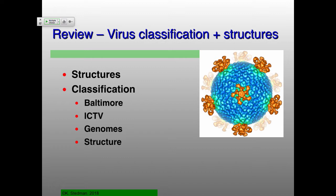Classification-wise, we talked about the Baltimore classification, which is based on — anyone? Is it based on the messenger RNA? It's based on the messenger RNA, exactly — how you get to that messenger RNA. So that's really the Baltimore classification, and also what gets packaged inside the virion.